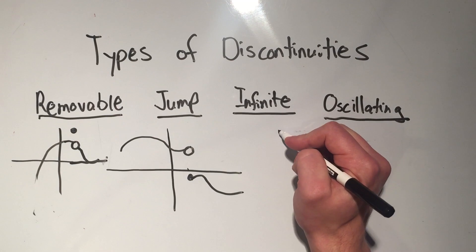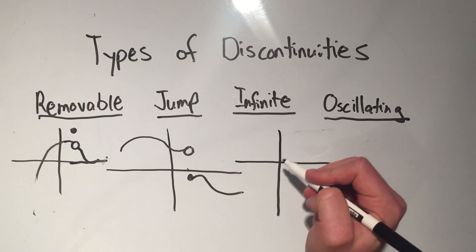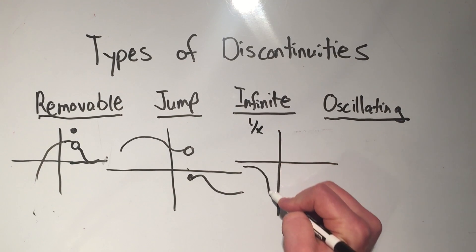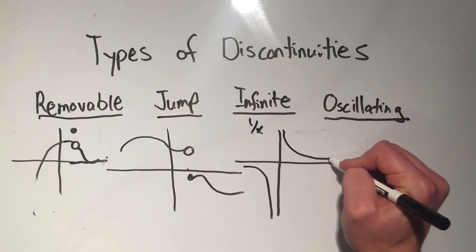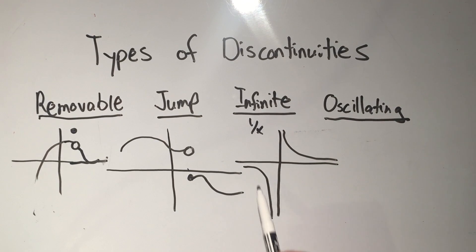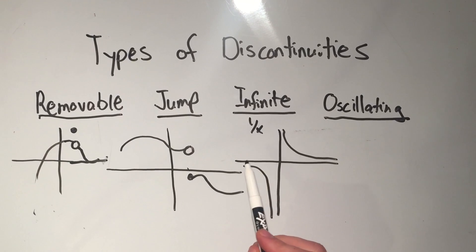Infinite discontinuities? Well, those are asymptotes. So if I had the graph 1 over x, 1 over x looks like this, has a vertical asymptote at x equals 0, the y-axis. This is an infinite discontinuity.